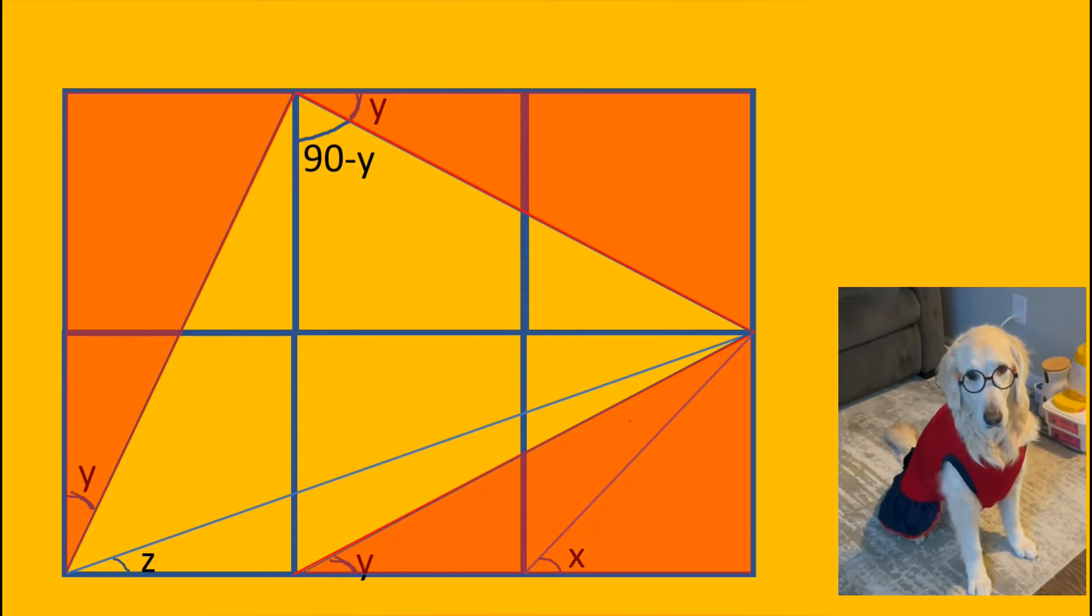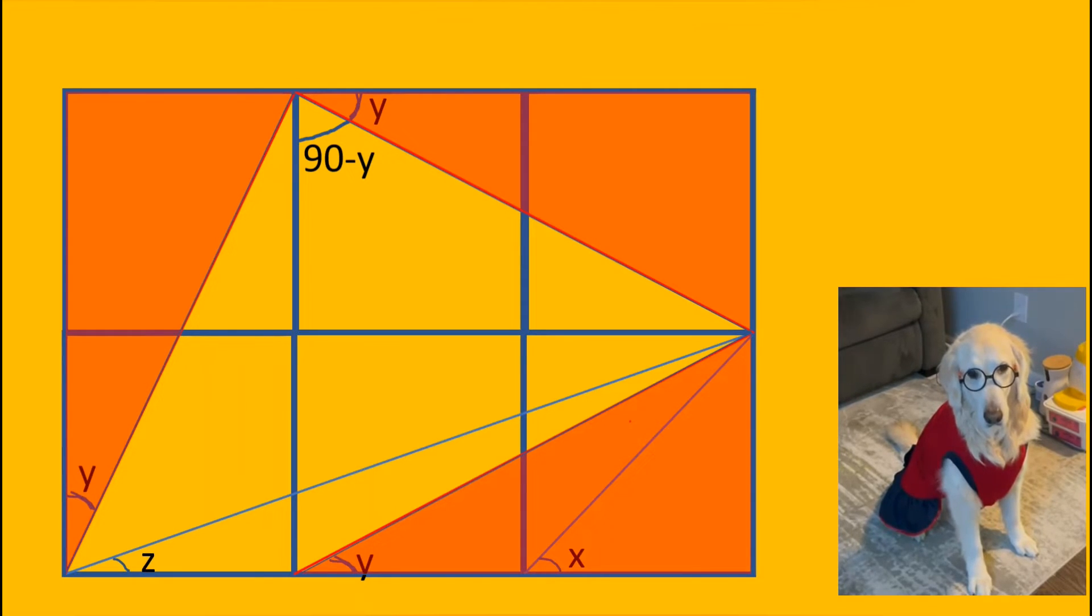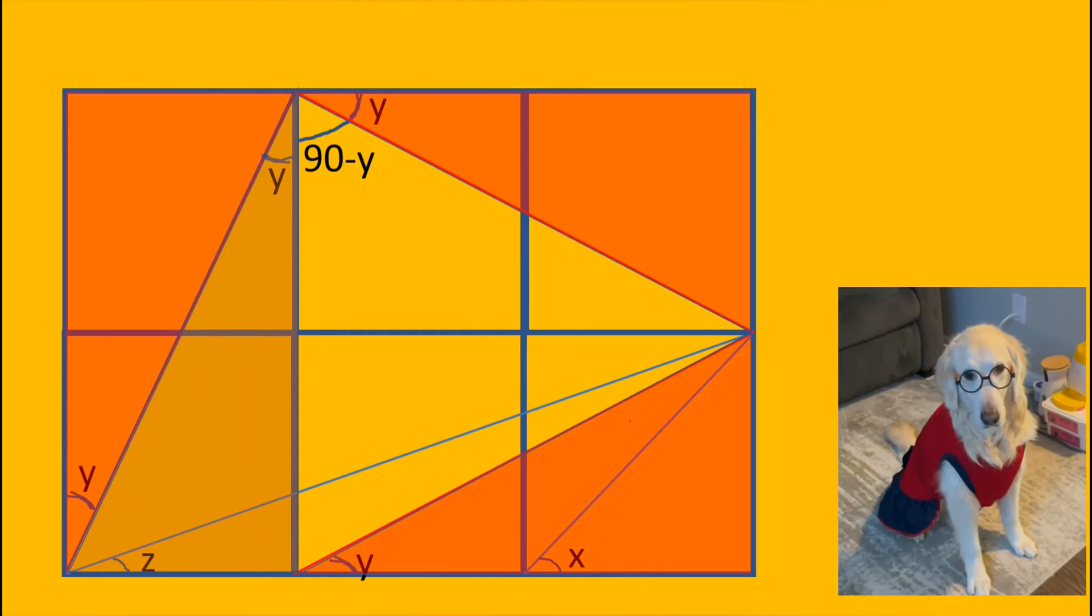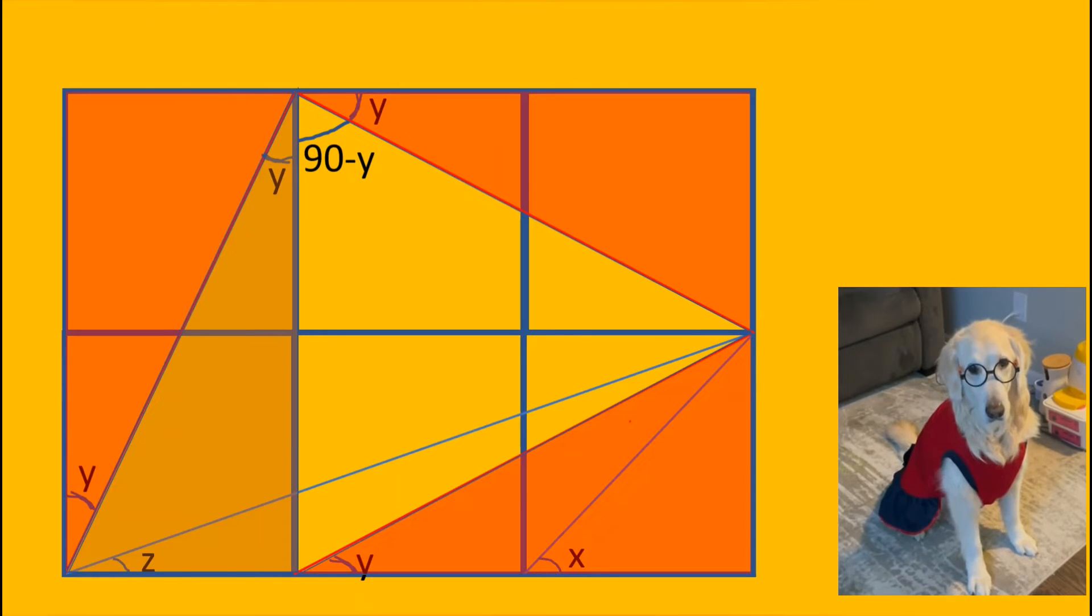We can find other angles easily now. The adjacent complementary angle is equal to 90 minus y. This angle is also equal to y because the triangles are again congruent.